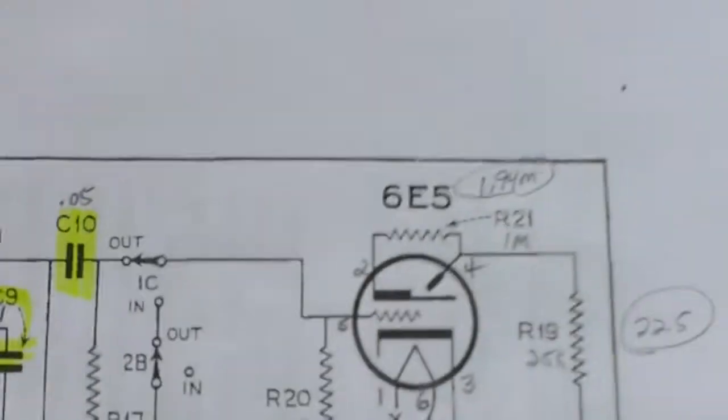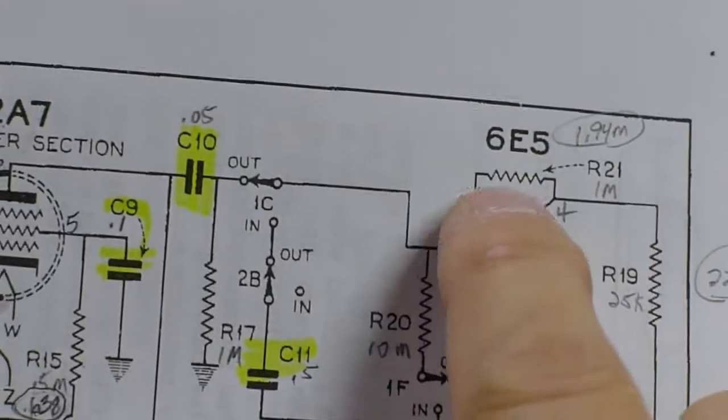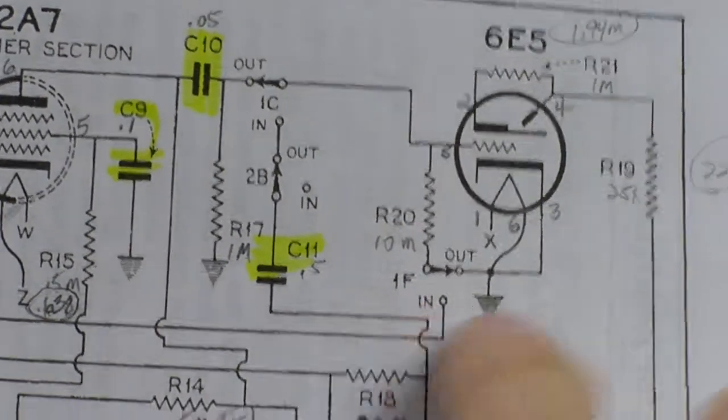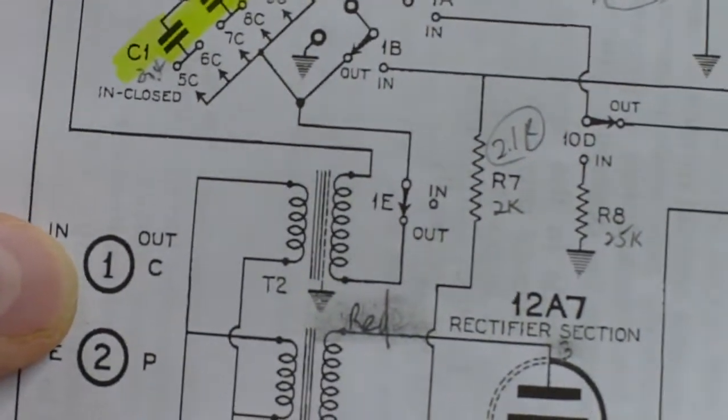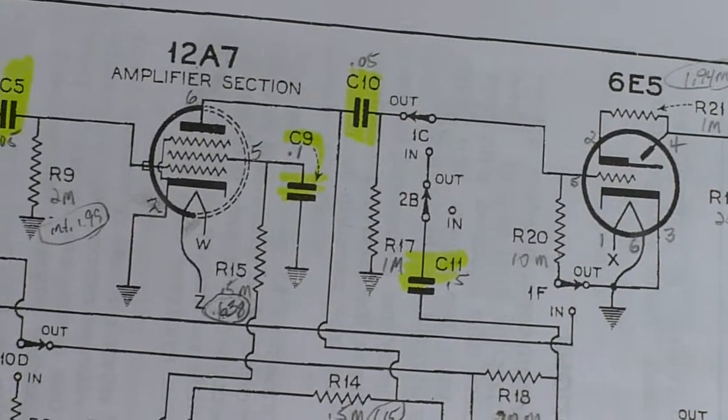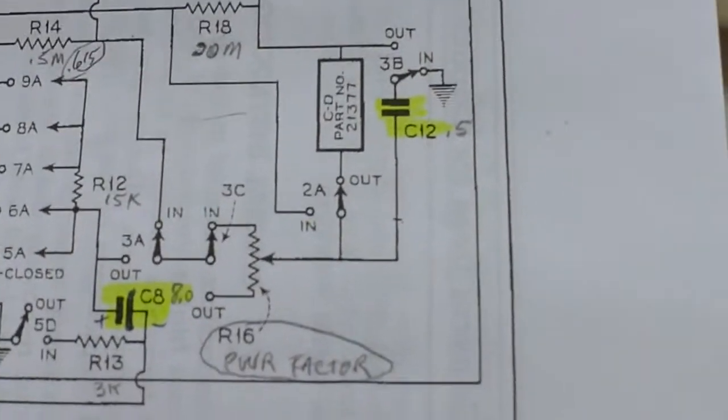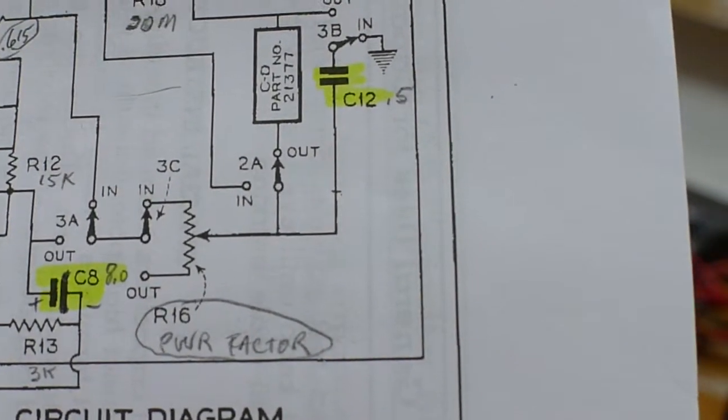But when I traced back some of these coming off of the 6E5, we had a 1F, and that correlated back to button 1 over here and terminal F. So where are C1, C2, and C3 in the schematic?